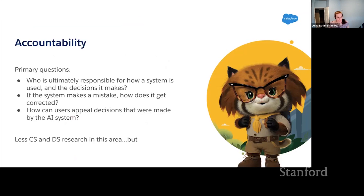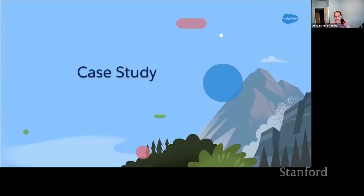The next topic is accountability. Once you're ready to deploy, you want to ask: who is ultimately responsible for how a system is used and the decisions it makes? If a mistake is made, how can it get corrected? How can a user appeal decisions made by the AI system? That right to appeal is another regulation enacted in the GDPR. There's a little less CS and DS research in this area, but it should be baked into every project you do.